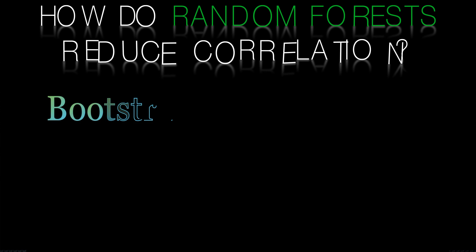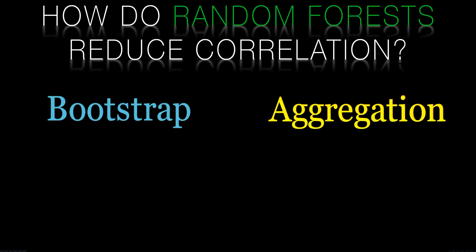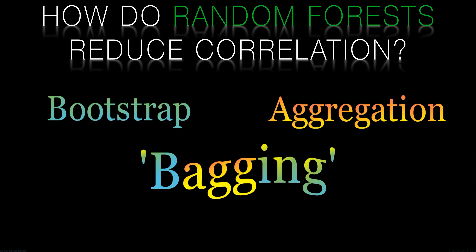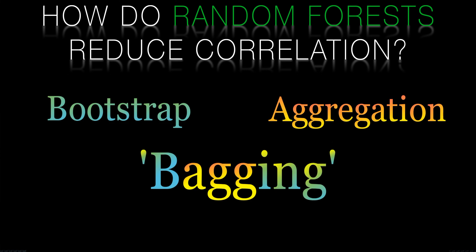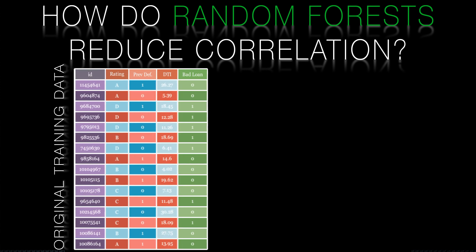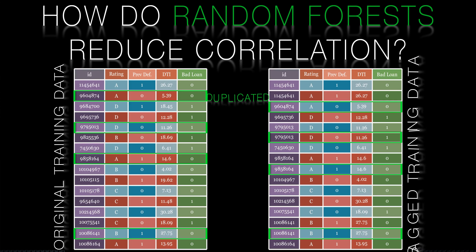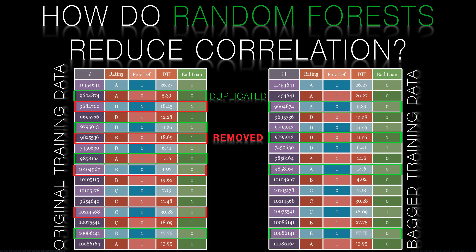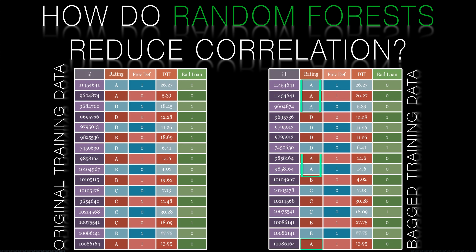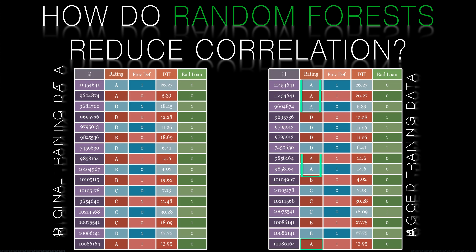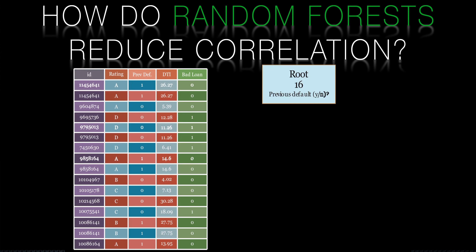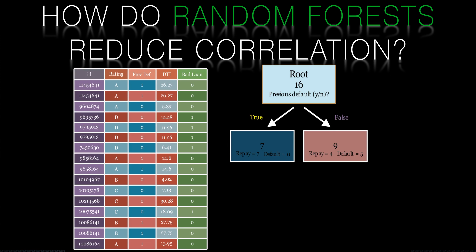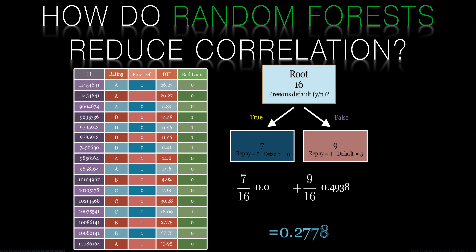Random forests achieve reduced correlation by bagging and feature selection. Recall from the prior video that bagging draws random samples from our data and allows replacement. This means that we will get some records repeated multiple times while other records will be left out entirely. On your screen is a simple example where we have four duplicate entries and four rows eliminated. This has resulted in a larger number of A ratings in our bagged training set than in our original sample set. When we run the Gini impurity splits on the bagged data we will end up with a different tree than on the original data. Each tree will have a different set of sensitivities, dramatically reducing their correlation.